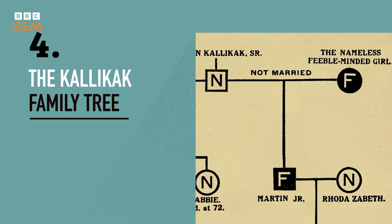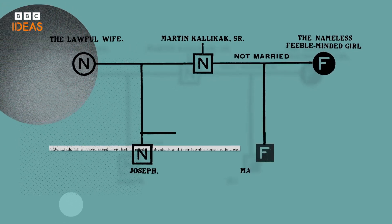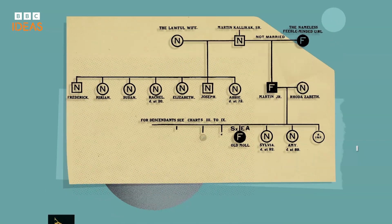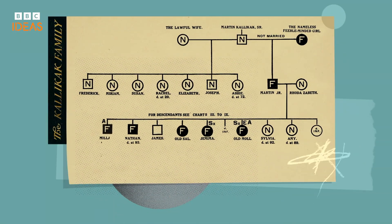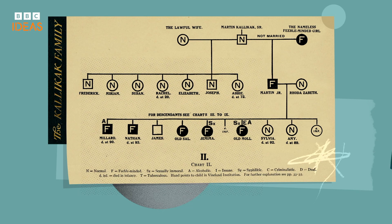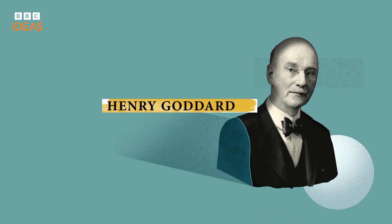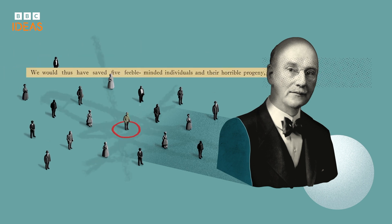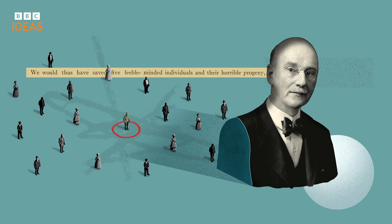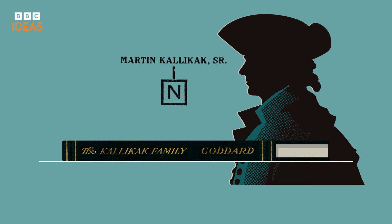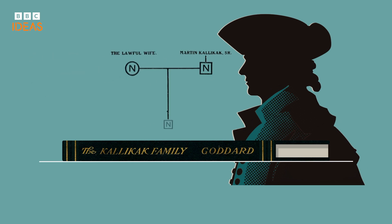Data visualisation can also be used for misinformation, sometimes with disastrous consequences. This is the Kalakak family tree. As a chart, it's not groundbreaking, but its impact was profound. It was conjured up by Henry Goddard, an American psychologist and eugenicist, who believed that one of society's greatest problems was feeble-minded people — basically anyone deemed to be of lower intelligence. Goddard wrote a book based on the story of Martin Kalakak, a soldier who was married and had a family of fine, upstanding citizens.